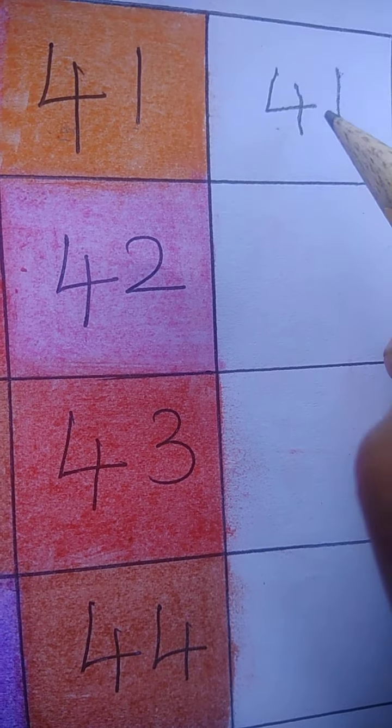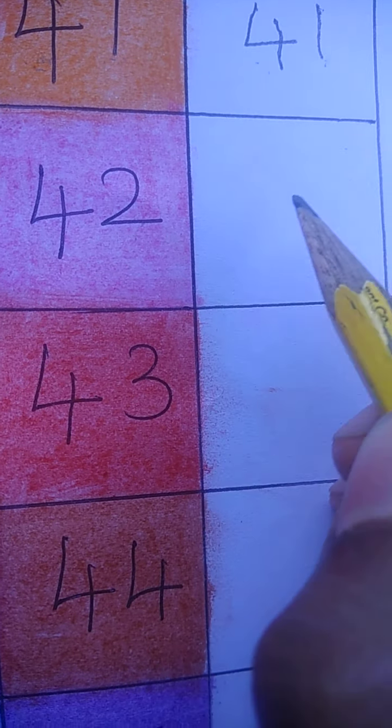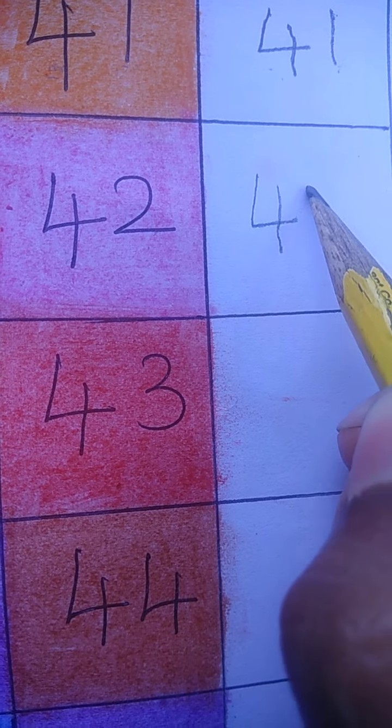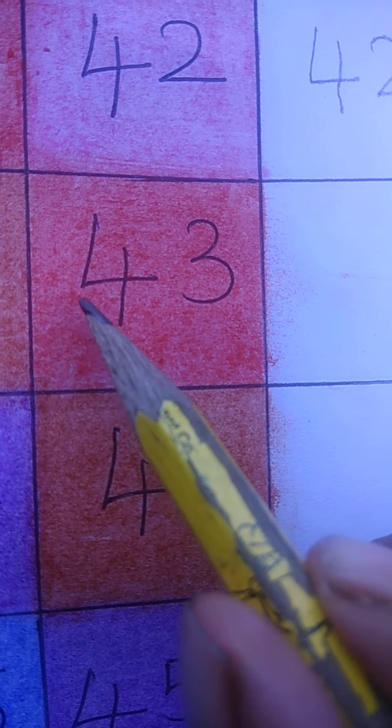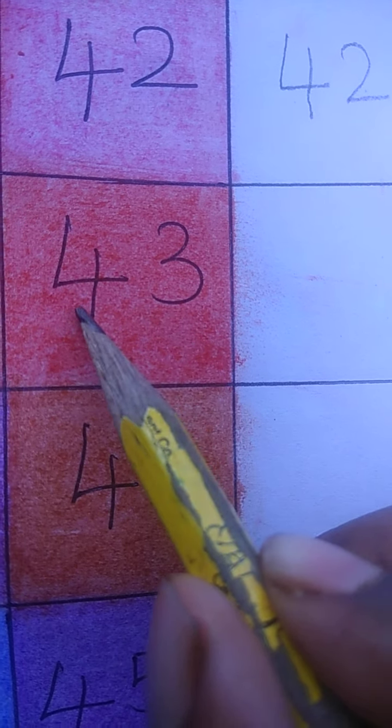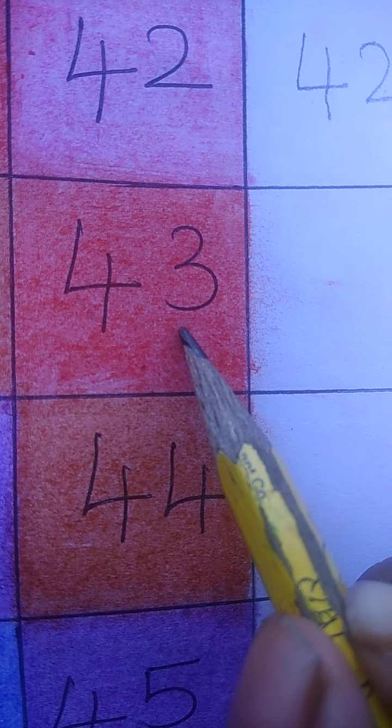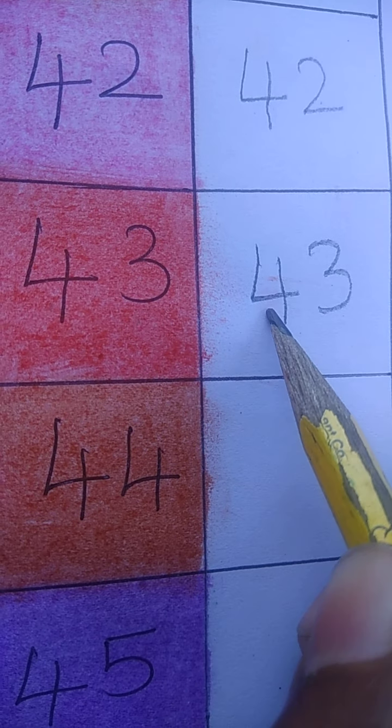4 1 41. Next number 4 2 42. Write 4 2 42. Next 4 3. We have to say 4 3 as 43. So write 4 3 43.